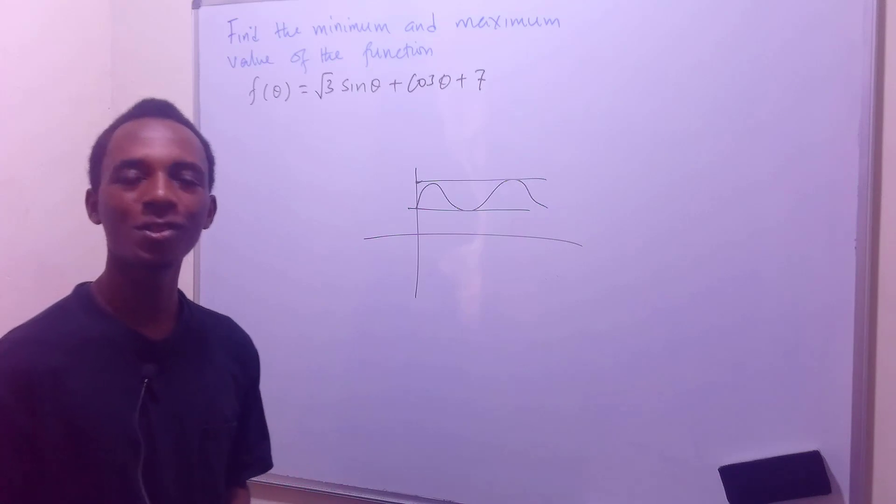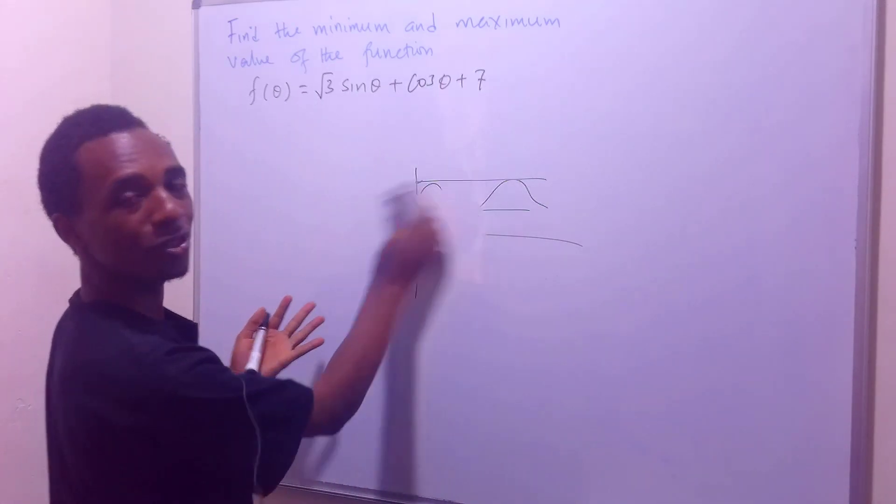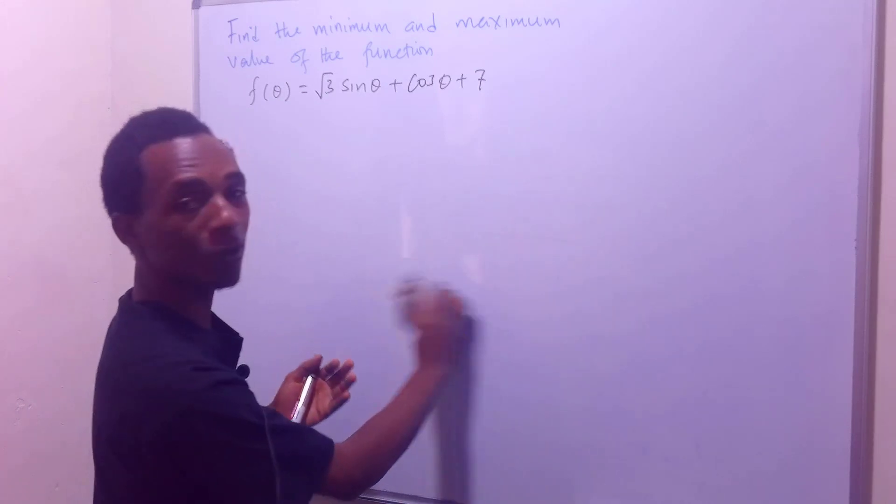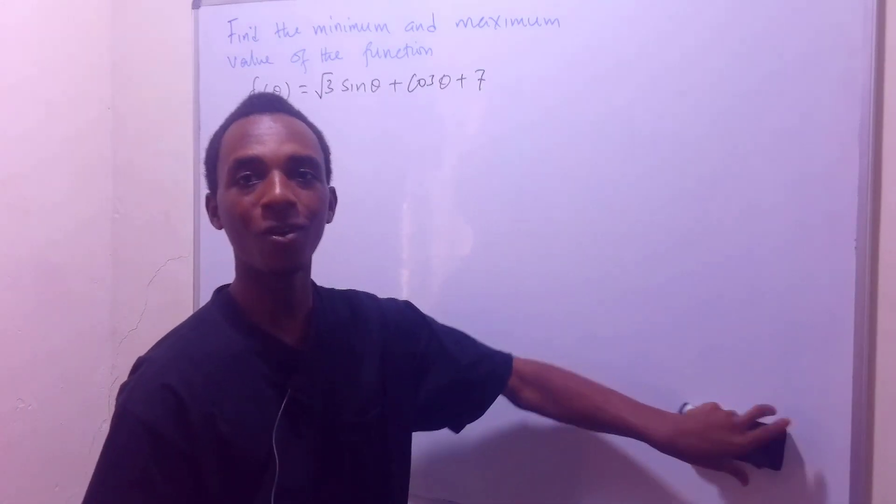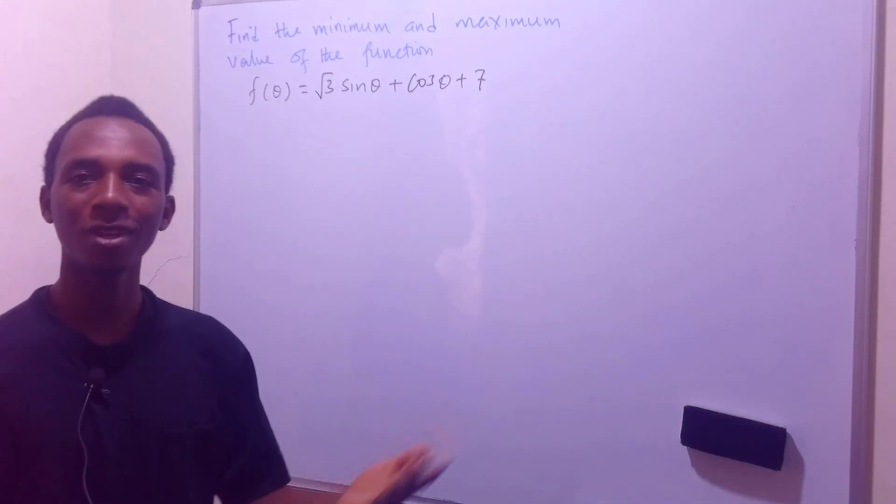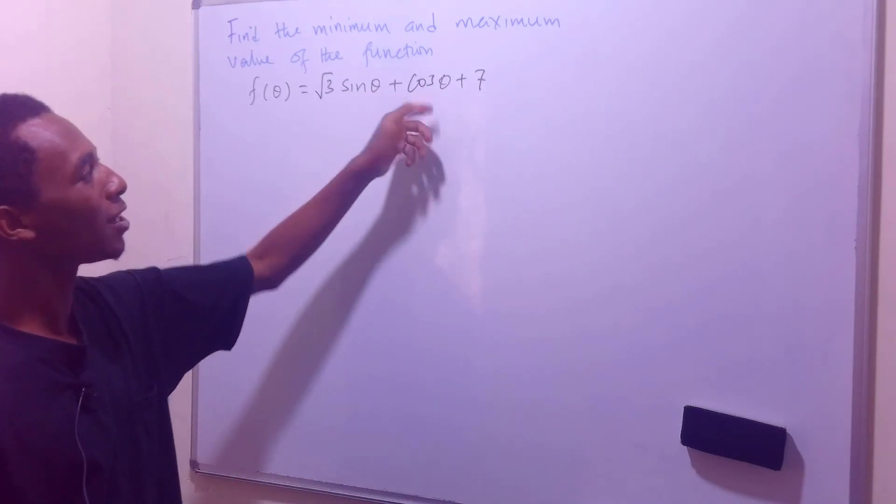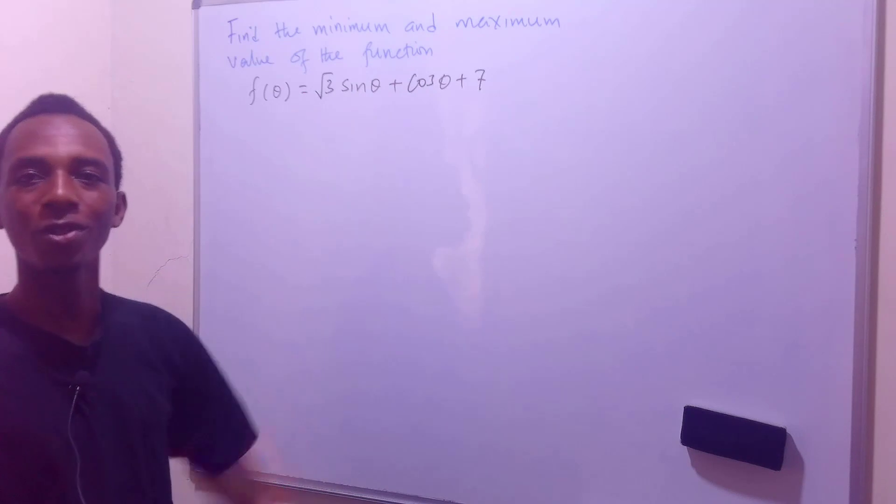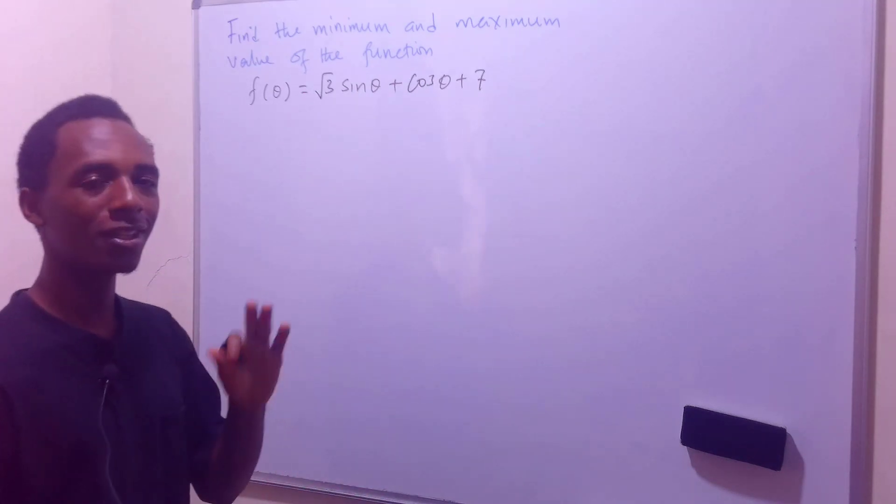But we are not going to use any of these two methods, we're going to use something else. And the method we're going to use comes from a clue that sine and cosine range from negative 1 to 1. So what I'm going to do here is to express sine and cosine as one trigonometric function.